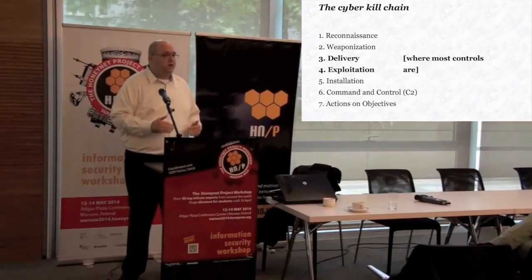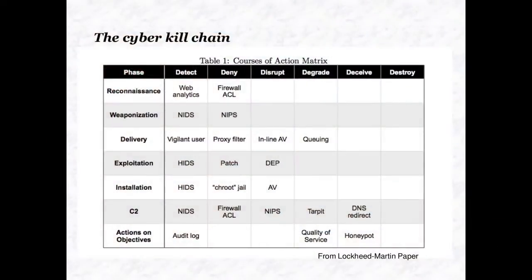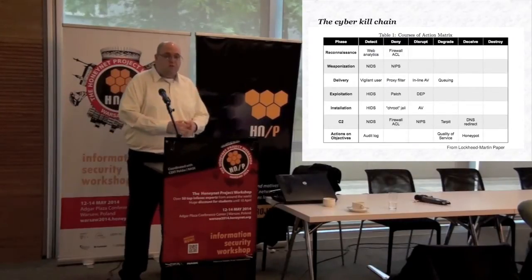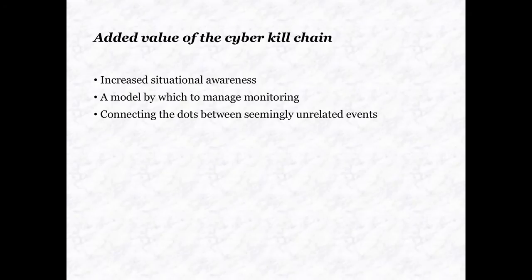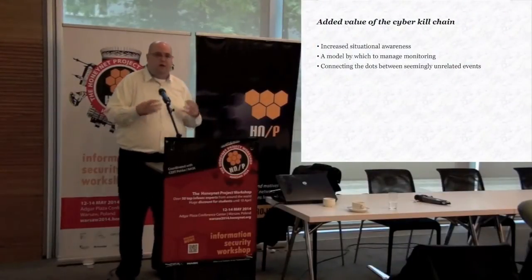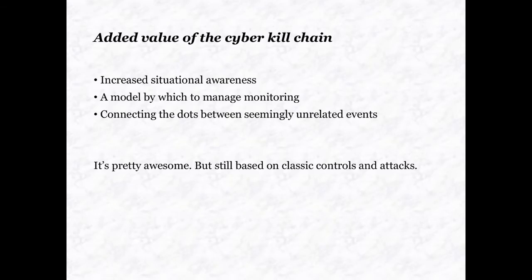From the Lockheed Martin paper, they tried to place some of these controls into their mapping. You can also look at your logs, see how incidents and events correlate according to these stages. If you haven't seen the paper, I would highly recommend Googling it. But it wasn't enough. It gave us increased situational awareness, a model by which to manage monitoring, and the ability to connect the dots between unrelated events. But it is still based on classic controls, on attacks.